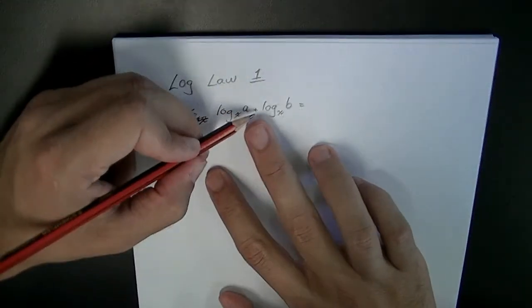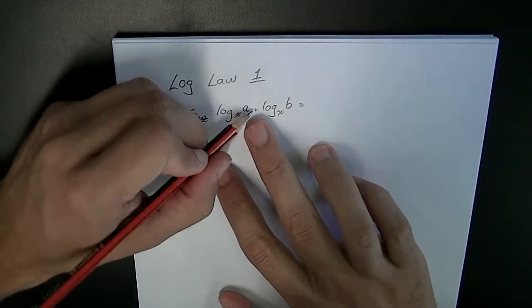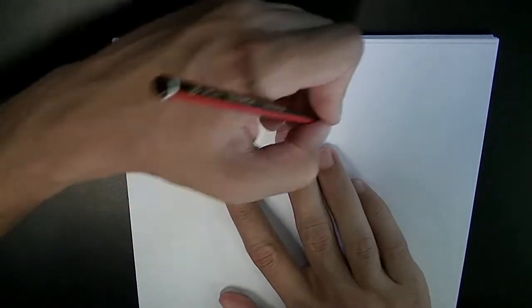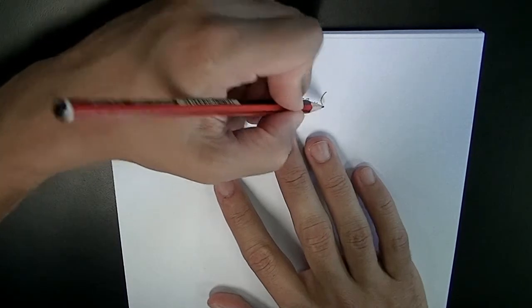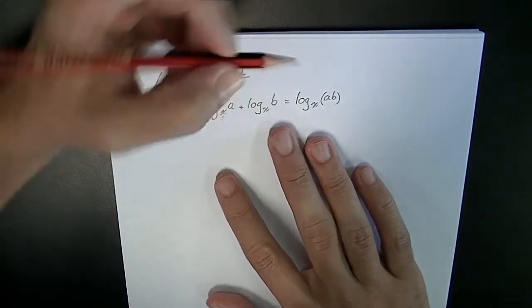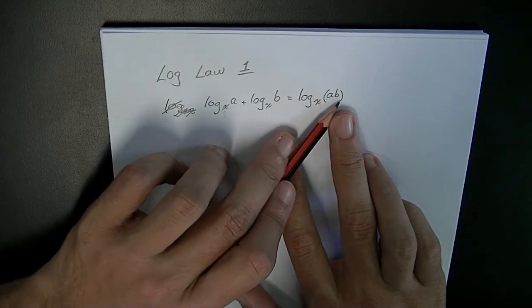Now log base x of a plus log base x of b is equal to log base x of (a times b).